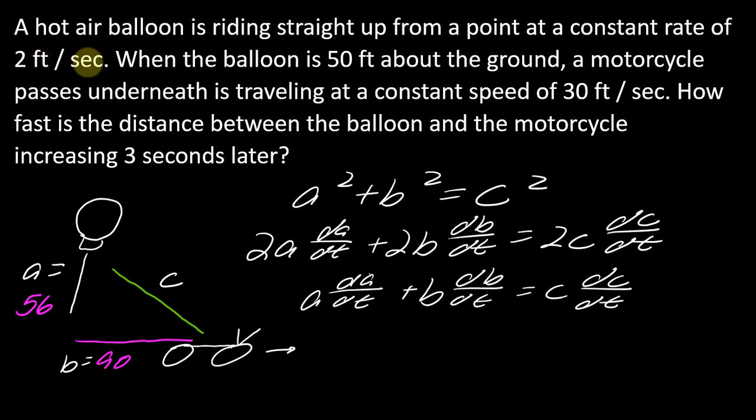db/dt is the speed of the motorcycle. I have to figure out what c is. And then the question is actually asking me what dc/dt is. So I will then have filled in all my variables.